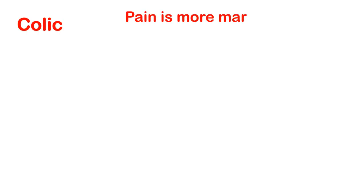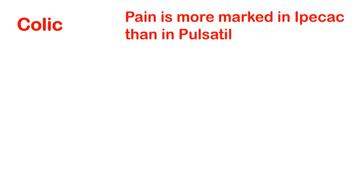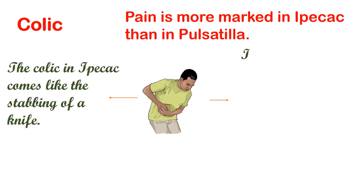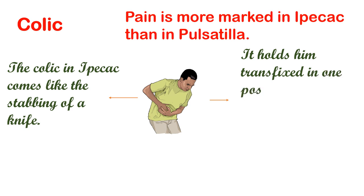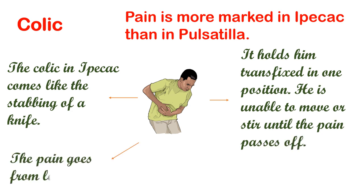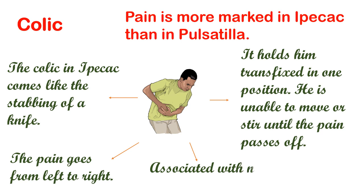Colic is more marked in Ipecac; the pain in Pulsatilla is less severe. The colic in Ipecac comes like the stabbing of a knife — it holds the patient transfixed in one position, unable to move or stir until the pain passes off. The pain usually goes from left to right and is associated with nausea and prostration.